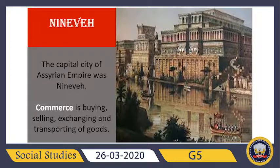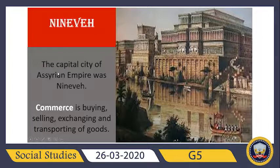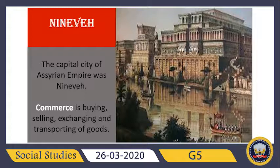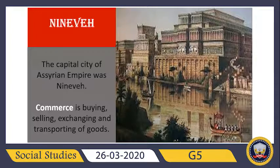Next, we will talk about the capital city of the Assyrian Empire. The capital city was Nineveh — here you can see Nineveh. The other cities of the Assyrian Empire were centers of commerce, government, and religion. You should know what commerce means: commerce is the buying, selling, exchanging, and transporting of goods. These other cities also contained luxurious temples and palaces.